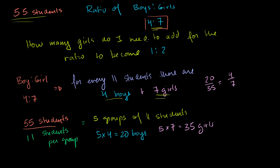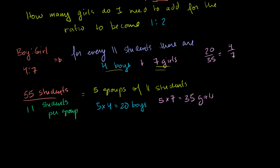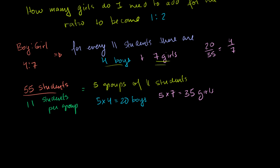Now, we're going to add girls to the classroom to change the ratio. So right now, we have 20 boys and we have 35 girls. We just figured that out. And I'm going to add some girls to the classroom. And my new ratio, after I add these g girls to the classroom, my new ratio is going to be 1 to 2.